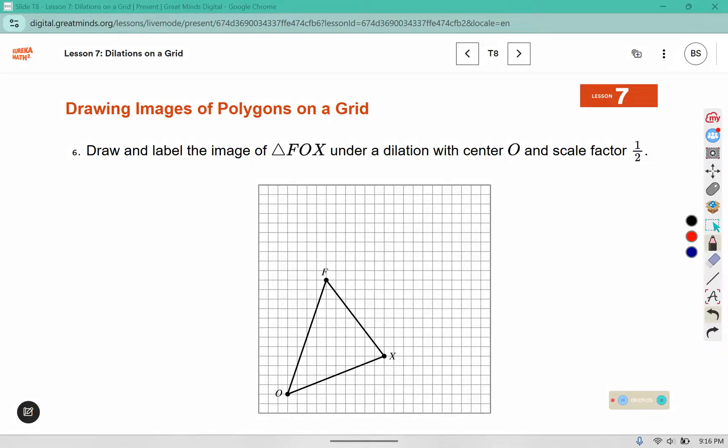This time we are dilating from O using a scale factor of 1 half. So O is our center of dilation. F is 1, 2, 3, 4, 5, 6, 7, 8, 9, 10, 11, 12 from O. And half of 12 is 6. So 1, 2, 3, 4, 5, 6. This should be the location of F prime.